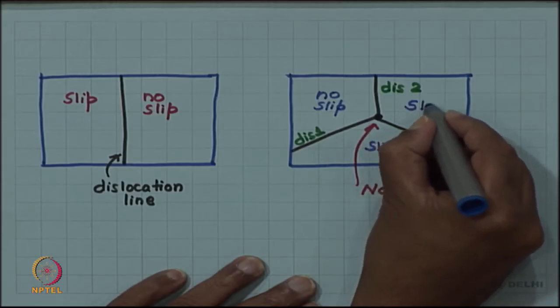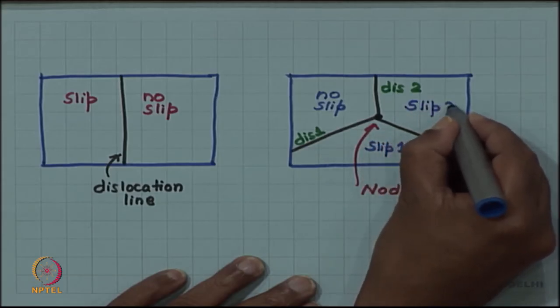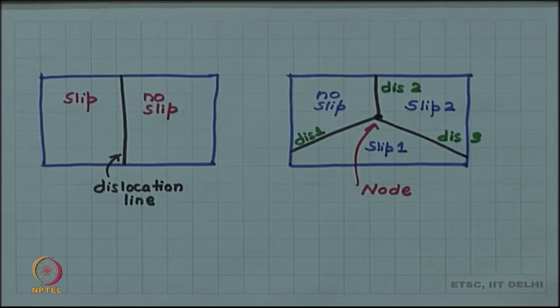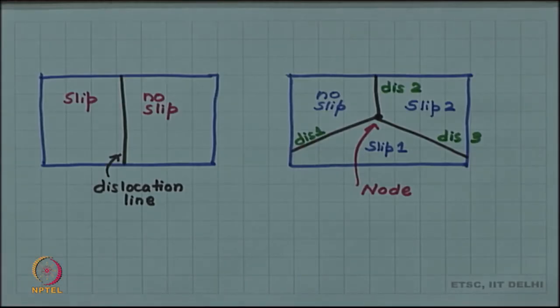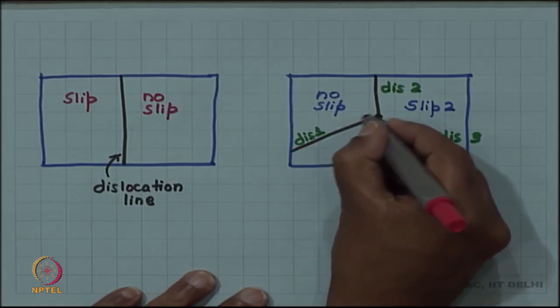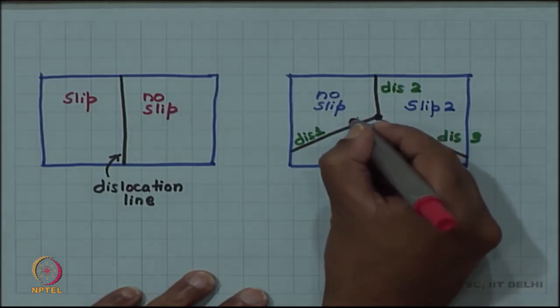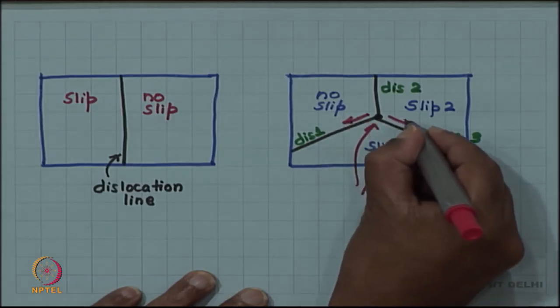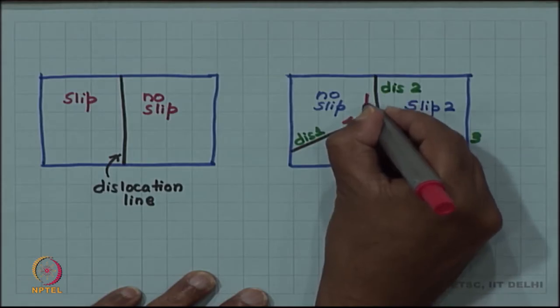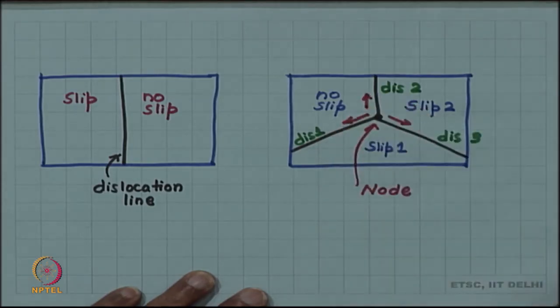This region will be having a different slip and let me call that slip 2. And corresponding to these slips all these lines will have Burgess vector as you know and the Burgess vector according to our convention also depends on the line vector.